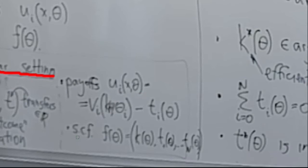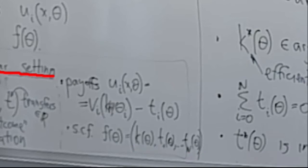Finally, we say that there is some social choice function f of theta that we want to implement. In the quasi-linear setting, a social choice function prescribes k of theta — an allocation — and some profile of transfers t_1 to t_n, transfers to every agent. All of these terms of course depend on the type profile theta.